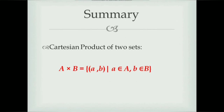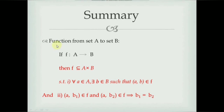Summary of the lecture: The Cartesian product of sets A and B, denoted A cross B, equals the set of all ordered pairs (a, b) where a belongs to A and b belongs to B. A function f from set A to set B is a subset of A cross B such that for every a in A there exists b in B with ordered pair (a, b) in f, and if (a, b1) and (a, b2) are both in f then b1 equals b2.